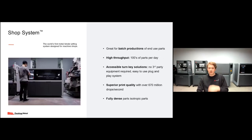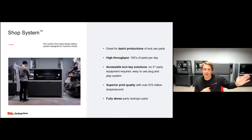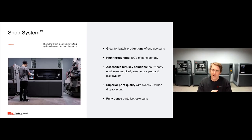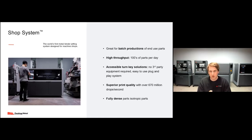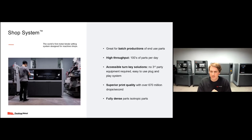For higher volume applications, we're going to be talking about the Shop System — a binder jetting machine designed for machine shops. It's great for batch production of end-use parts with high throughput: you can produce hundreds of unique geometries per day or hundreds of the same parts per day. It's a very accessible, turnkey solution requiring no third-party equipment. It has very high print quality with over 670 million droplets per second and produces fully dense isotropic parts great for end-use applications.